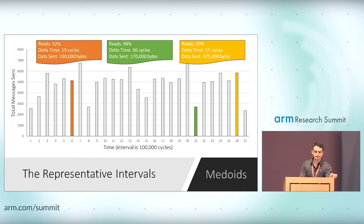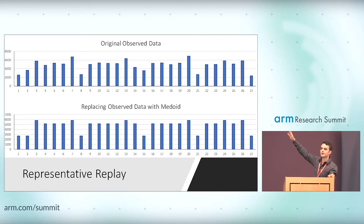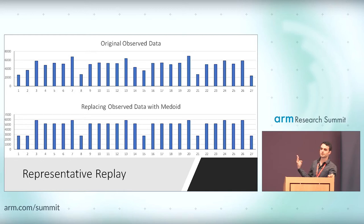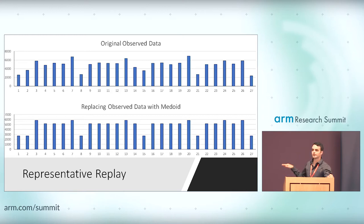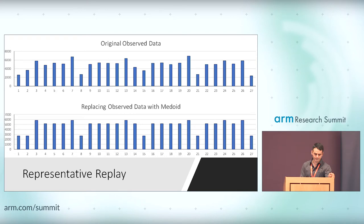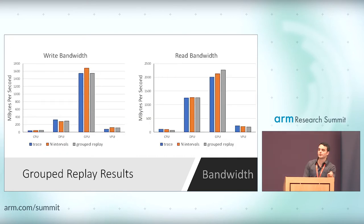Using these medoids, rather than replaying all 27 intervals or creating 27 statistical profiles, we just use the three from clustering. When we replace groups with the medoid interval, we still get some time-varying behavior — not as variable as the original observed data, but it still changes and looks relatively similar. If I replay those 27 intervals using only three statistical profiles in sequence, my bandwidth is still relatively similar. But I still haven't received any speedup — I'm simulating for the exact same number of cycles.